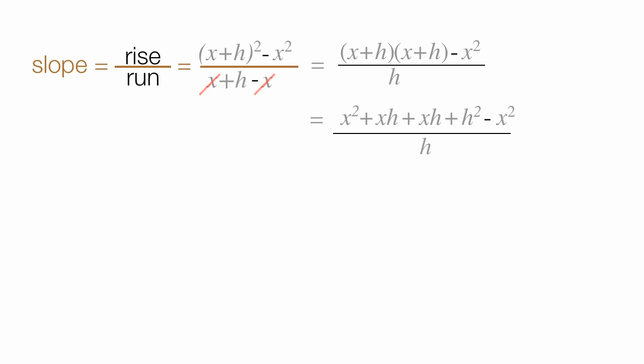x squared minus x squared, those two x squareds cancel each other out. I add my two xh's together, which gives me 2xh, plus h squared, divided by h.